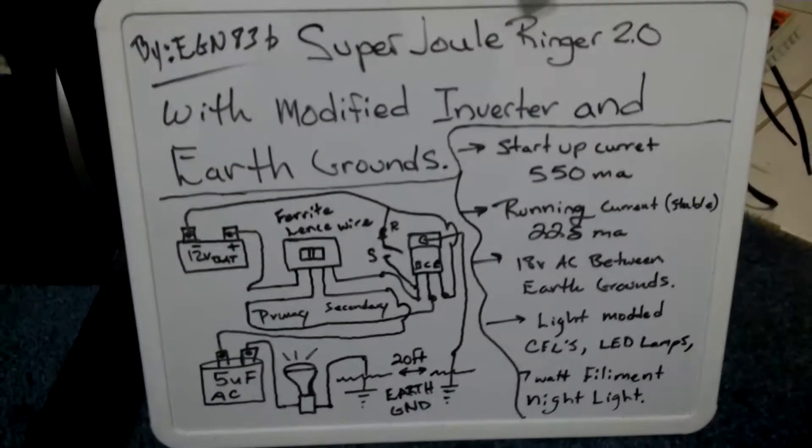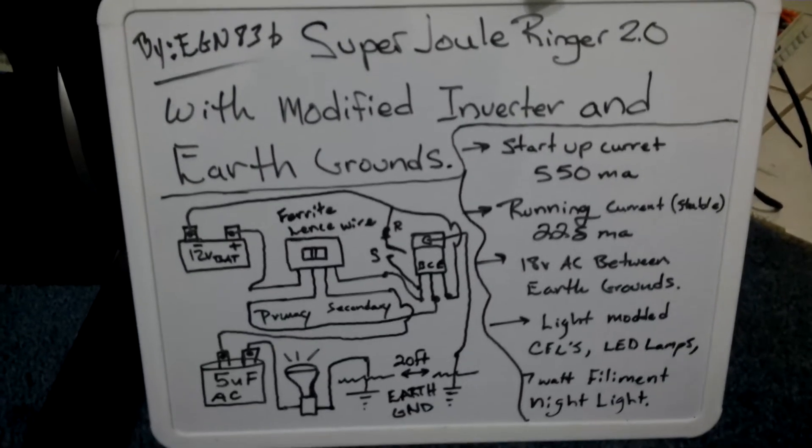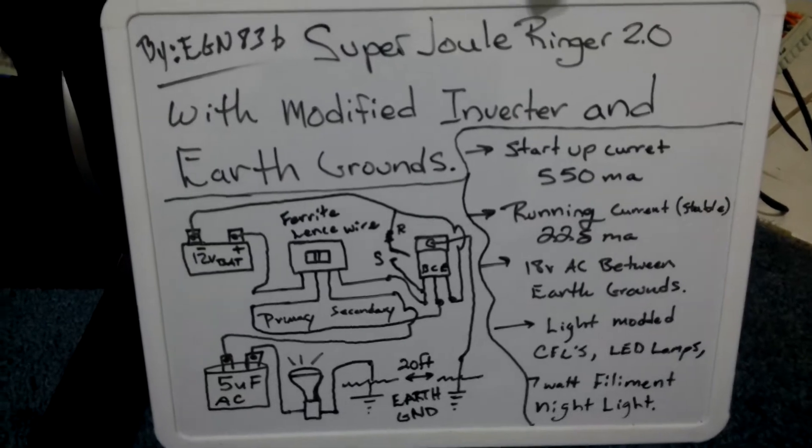Hello, this is EGN83B with the Joule Ringer 2.0 with a modified inverter and earth grounds.